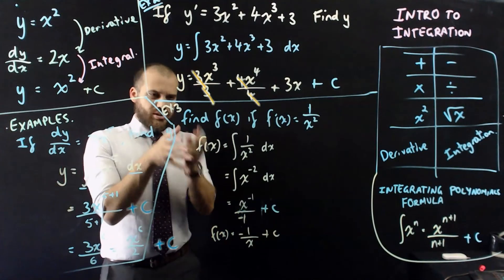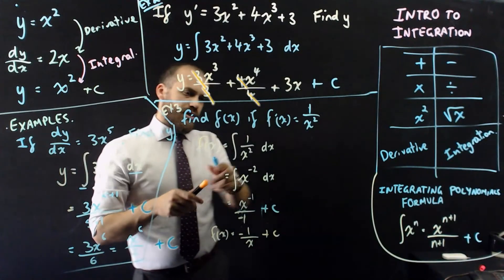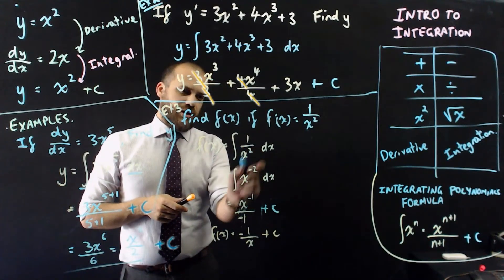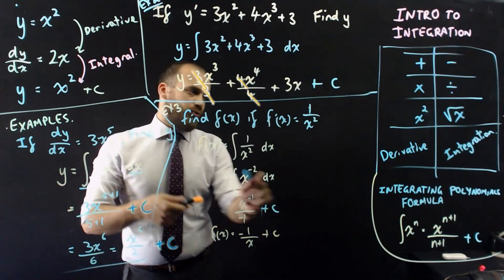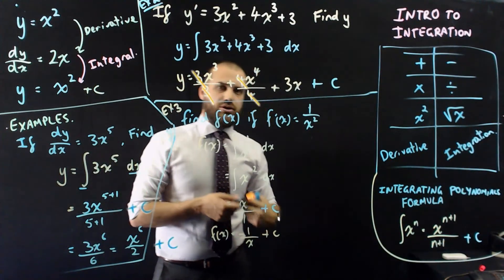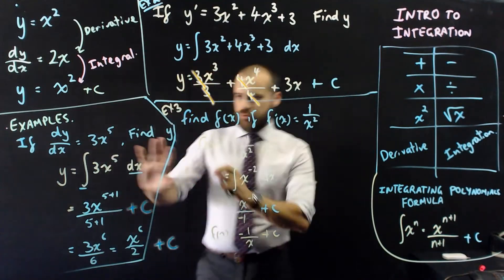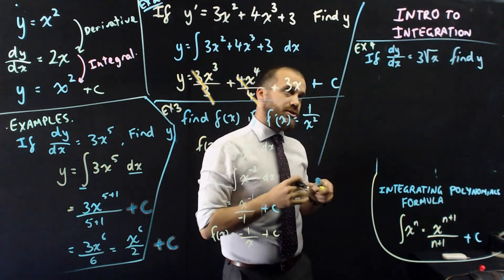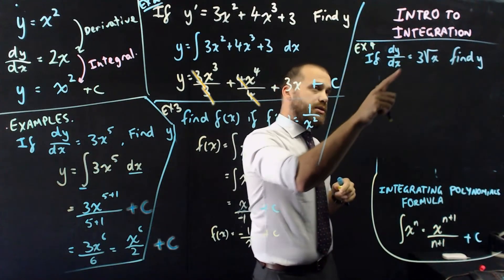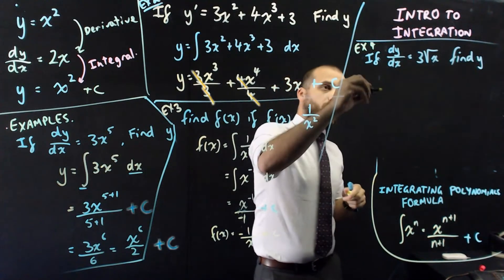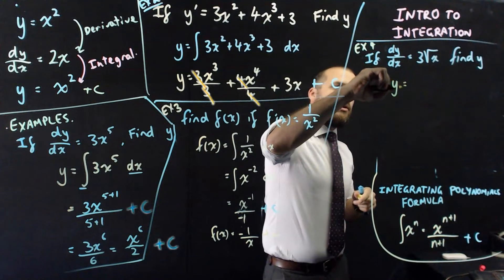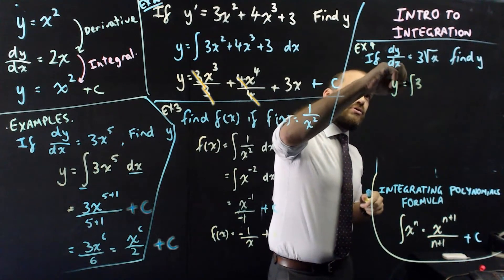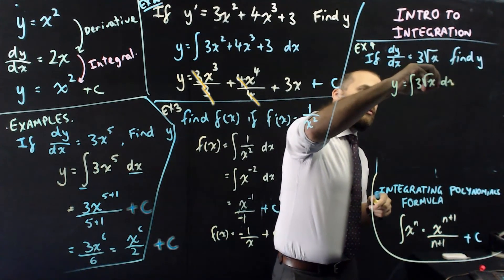Alright. So, the thing to take away from this third example is, just like with derivatives, sometimes you can't attack it directly. You have to rearrange it first before you can apply our integration formula. I'm going to get rid of that example, I'm going to do a new one in its place. So, I found some space here, so let's do it here instead. If dy dx equals 3 root x, find y. Alright. So, y is going to be equal to the integral of that 3 root x, with respect to x.